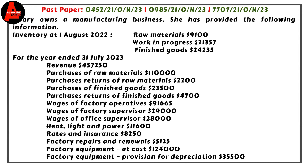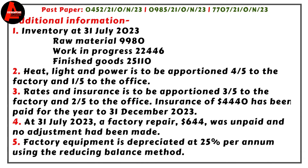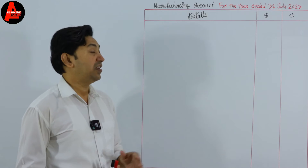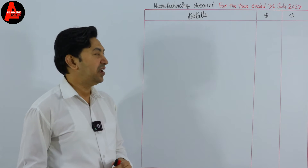Here we see inventory: raw materials, work in progress, and finished goods for the year ended 31st July 2023. We have a list of balances, and at the end of the question we have five additional pieces of information — these are actually adjustments that we need to apply to the relevant amounts in this account.